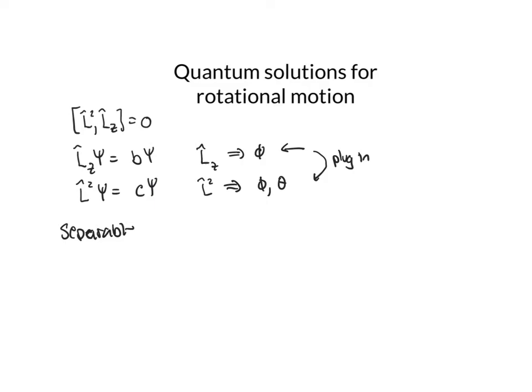If I think about my wave function, it has to be a function of both theta and phi. But I can write this as a function of theta times a function of phi — M of phi. So if it's true that my function is just two different functions multiplied together, then I can separate the problem into two different eigenvalue problems and solve each of them separately.